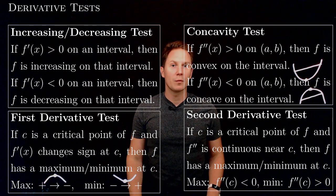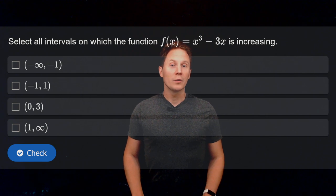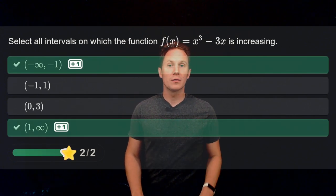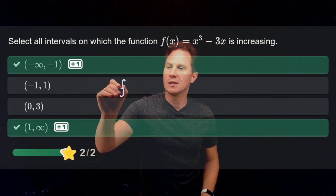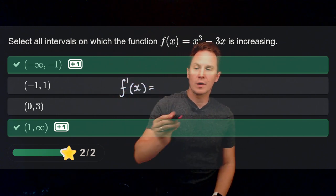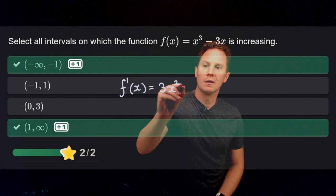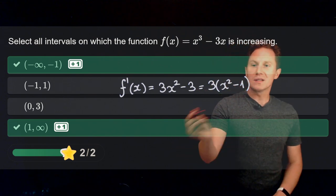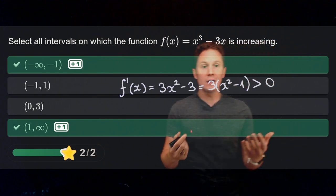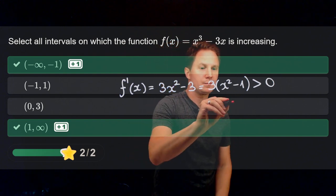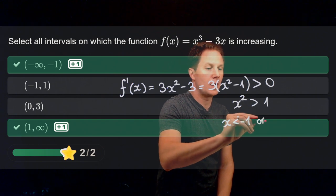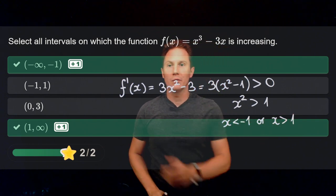Let's solve some problems. Select all intervals on which the function f(x) = x³ - 3x is increasing. To find where the function is increasing, we apply the increasing-decreasing test, for which we need the first derivative of the function. The first derivative is 3x² - 3, or 3(x² - 1). This first derivative is positive and the function is increasing if x² is greater than 1, which happens if and only if x < -1 or x > 1. So those are the two intervals.